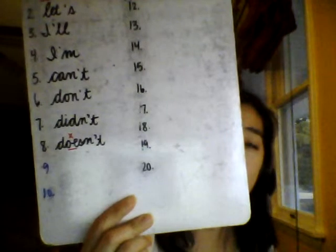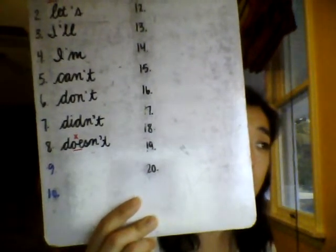Number eight: doesn't, that's the contraction of 'does not.' She doesn't want ice cream — she wants cake. When we think to spell 'does,' we think to spell 'do' with an E-S. It has an exception. So spell does — D-O with an E-S — and then N-O-T. Drop the O for doesn't. Spell out loud: D-O-E-S-N apostrophe T. Doesn't, short for does not.